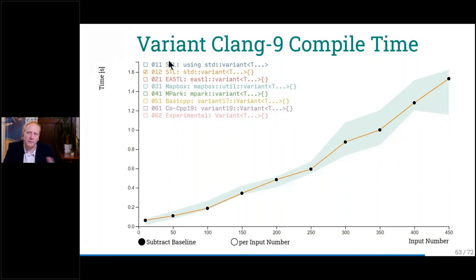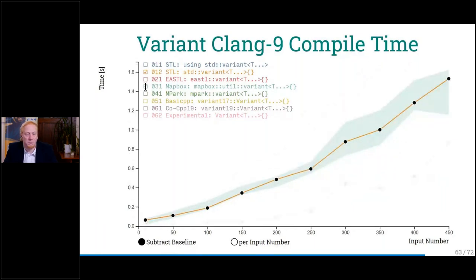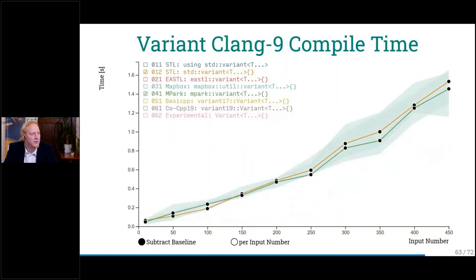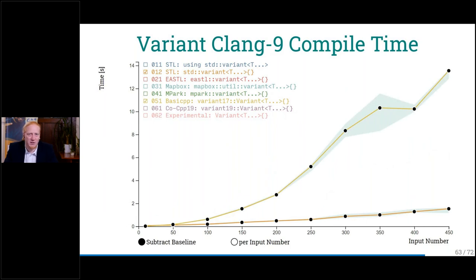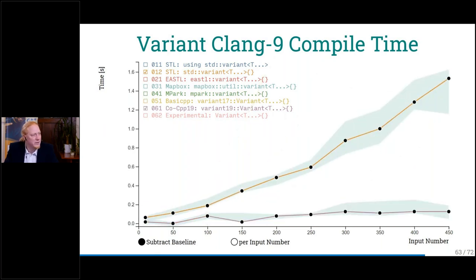How does compile time look? We have the STL implementation. Comparing to EASTL on Clang — not good. Mapbox is faster, so that's promising. Michael Park: not really faster, but it has a lot of features, so if you need them. Our basic CPP implementation — I thought it's fast, but actually it's not, at least not when we create just an instance. My faster implementation seems to beat them all — it's not really measurable compared to all the others. I don't know what goes wrong with these variant implementations, but it took a while to get a decent, fast variant.